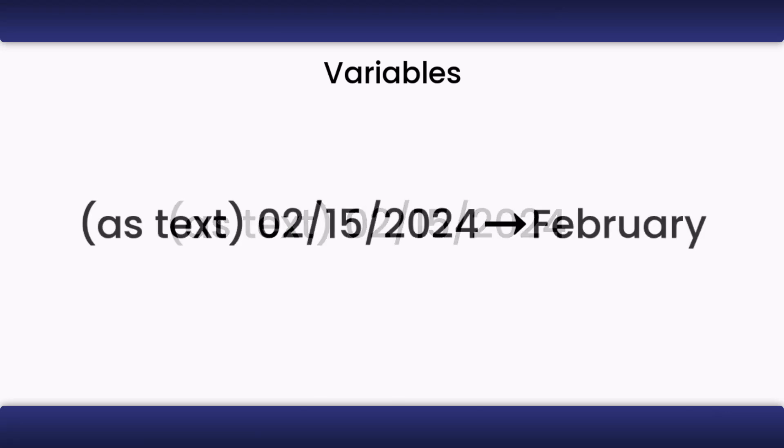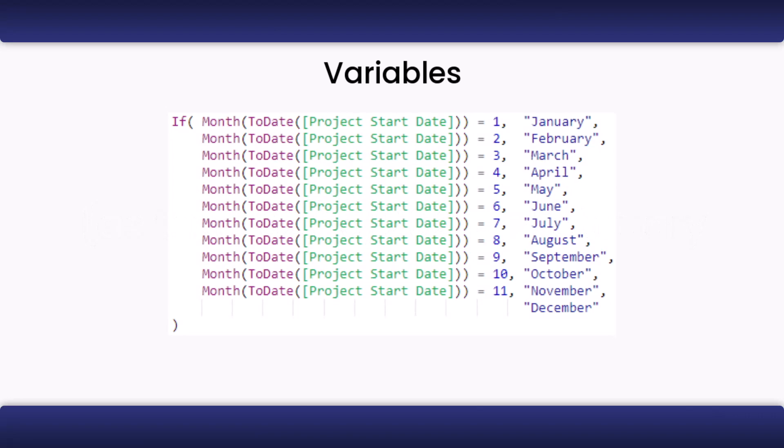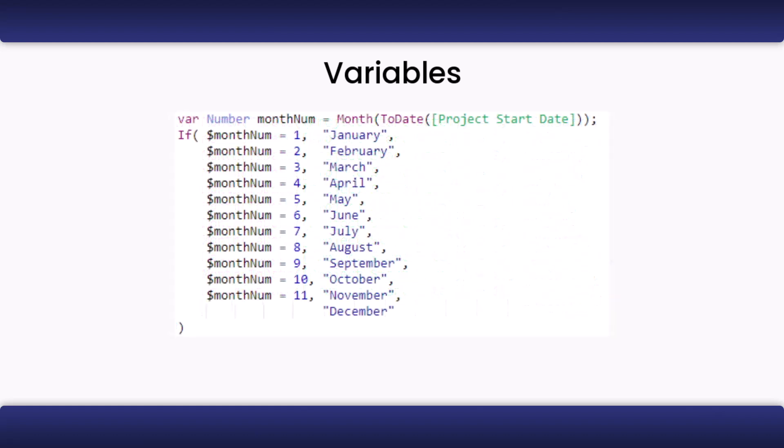For example, let's say you have a formula meant to check the month based on a date in text, and the output is the name of the month. A formula without variables would look like this. As you can see, we have to repeat the month to date project start date 11 times. That's a lot of typing, and in some formulas, you may have to change the way you are getting this data, so you'll end up changing it 11 times. Instead, using a variable, we can type it like this. Now we only have to type the calculation a single time and just reuse the variable. If we ever need to change the calculation, we also only have to change it in one spot. This will keep you from creating messy formulas.